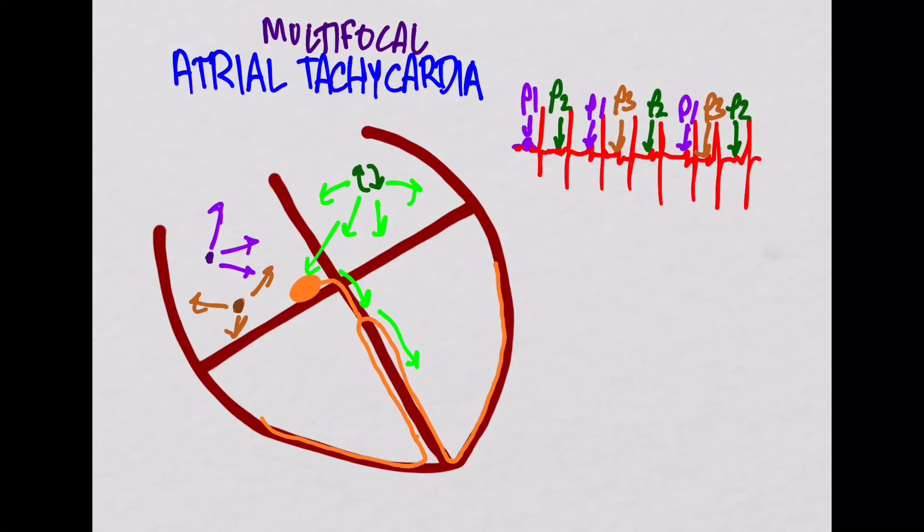Here you'd see one P wave that looks like this. I just made them different colors because I can't draw well enough here to make them look different. So you got one purple one, one green one, a purple one, an orange one, a brown one or green one, purple one.